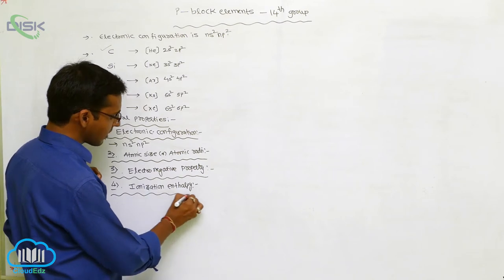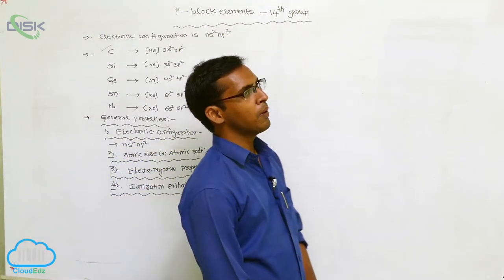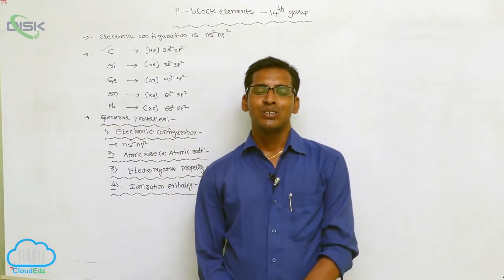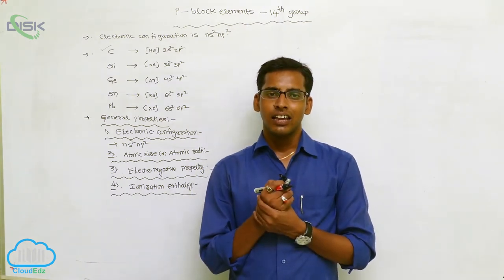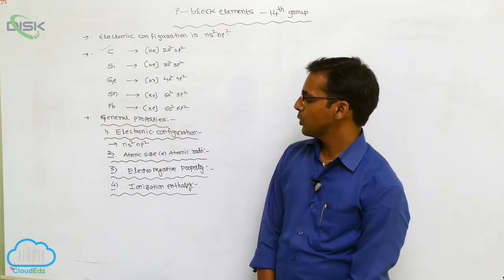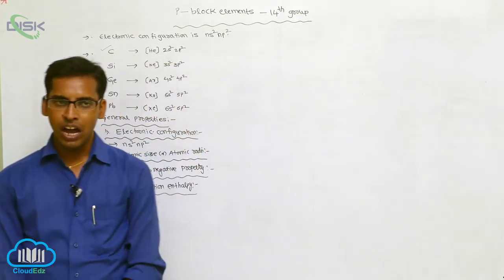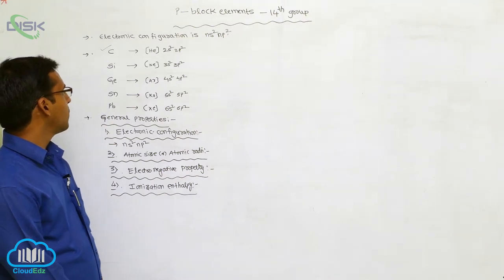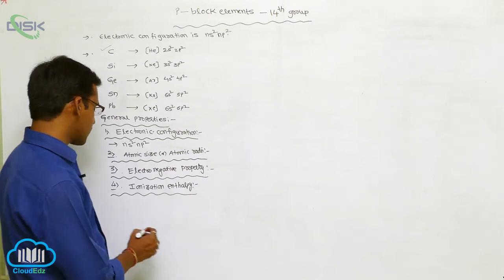The ionization enthalpy values in Group 4A elements decrease from top to bottom due to increasing atomic size. The ionization enthalpy of carbon is more compared to the remaining elements in the group.